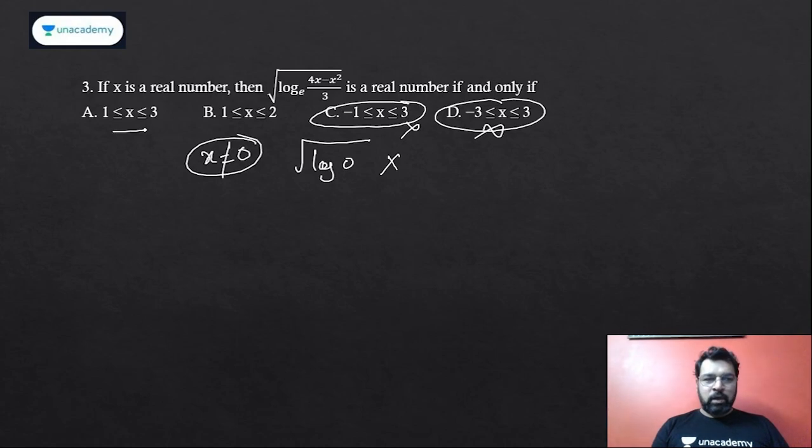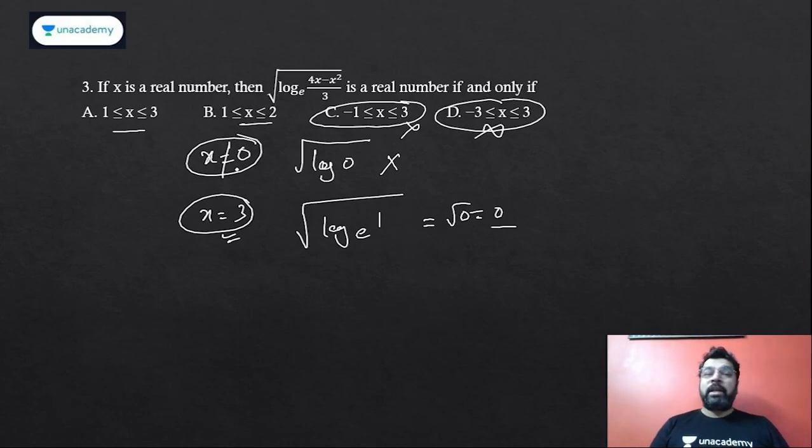So options which involve 0 will be straight away ruled out. Now in the remaining options, take any value which is in one of them and not in the other. You can see in the first option 3 is there, in the second option 3 is not there. So put x equal to 3. If you put x equal to 3, it will be log base e of 3 into 4, 12 minus 9, 3 upon 3 is 1, log 1 is 0, root 0 is 0. 0 is defined, no problem with that. That means 3 does not create any problem, so it should be in my answer. So option B is also ruled out. My answer is correct.